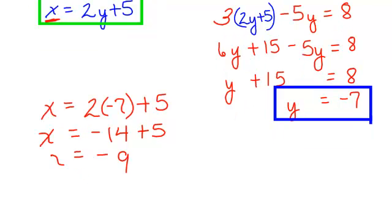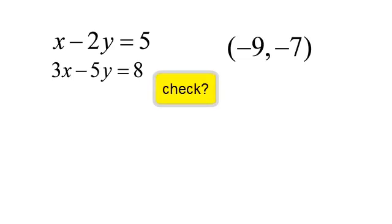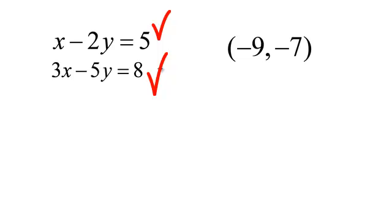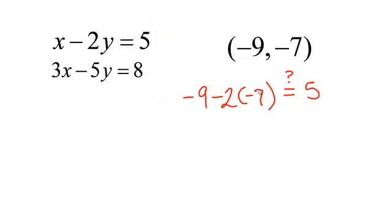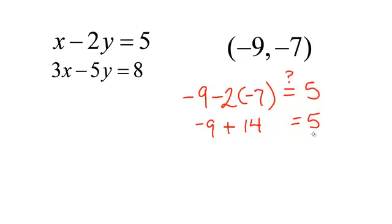We need to write our answer as a point. So our answer is, the x comes first, negative 9, negative 7. And I could check this, remember, this was our answer, negative 9, negative 7, and I should be able to plug it into not just 1, but both of those equations, and it should work. So negative 9 minus 2 times negative 7 should equal 5. That would be negative 9 plus 14, and yes, that is equal to 5.